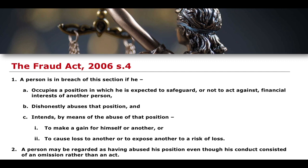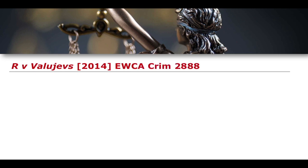The mens rea for fraud by abuse of position is essentially the same as for sections 2 and 3 — it requires dishonesty and an intention to make a gain for himself or another, or to cause loss or to expose another to a risk of loss. The difference is the actus reus: first, occupying a position in which you are expected to safeguard and not act against the financial interests of another person, and second, abusing that position. This must be done with dishonesty and with intent to gain or cause loss.